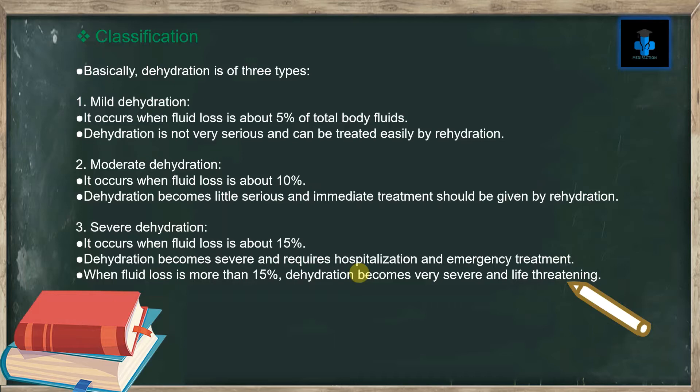Number three, severe dehydration — it occurs when fluid loss is about 15%. Dehydration here becomes severe and it requires hospitalization and emergency treatment. When fluid loss is more than 50%, dehydration becomes very severe and is also life-threatening.